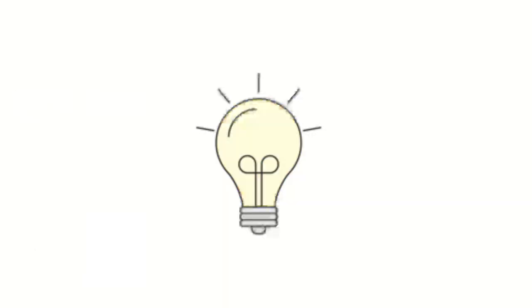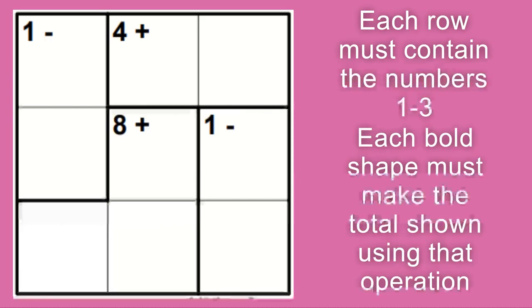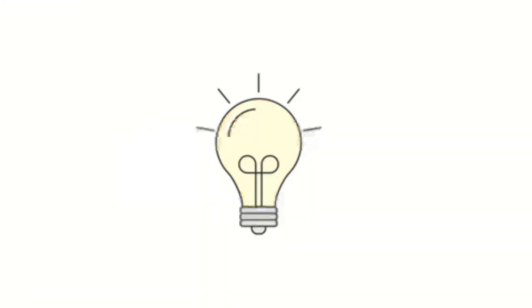That was your first puzzle for today. Your second puzzle is an Inky puzzle. The rules are that each row and each column must contain the numbers 1 to 3, and then each bold shape that you see on the grid must make the total shown using that operation, whether it's addition or subtraction.